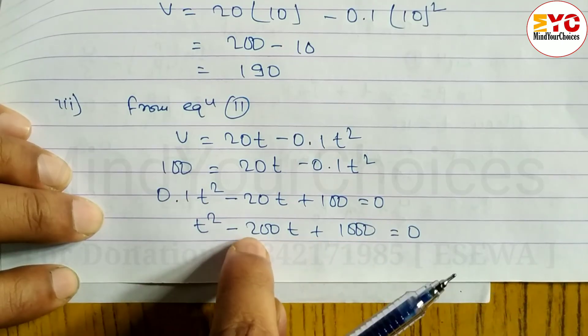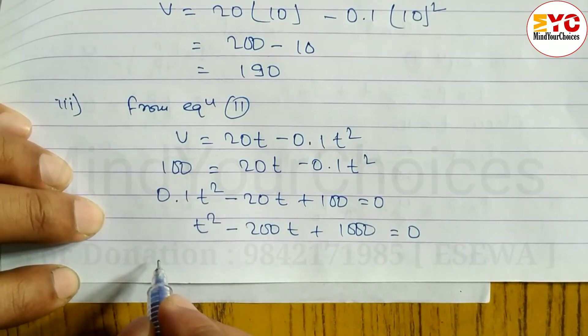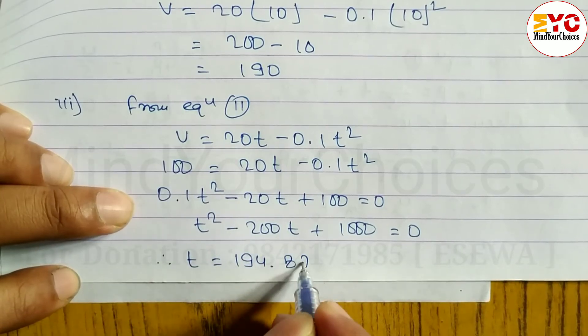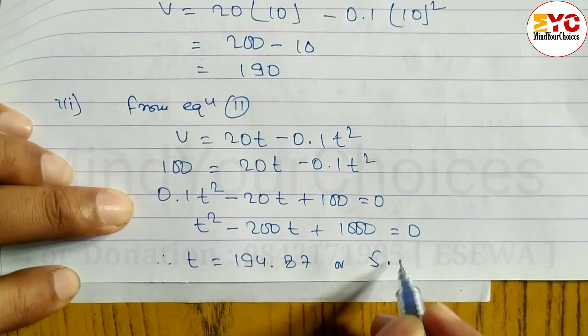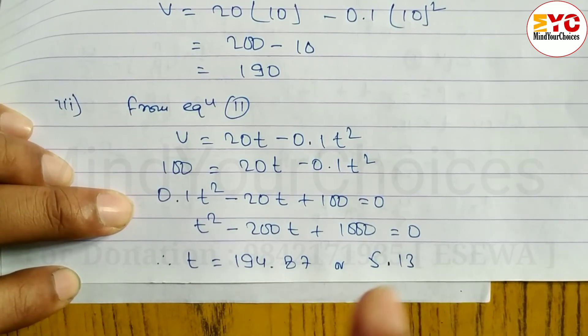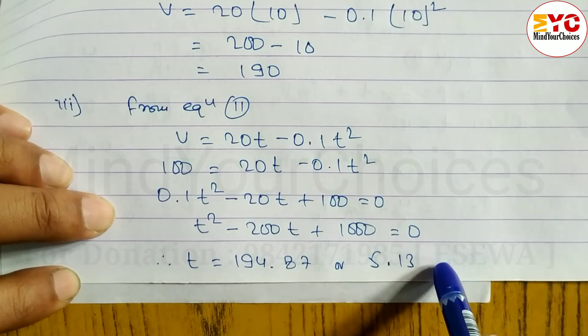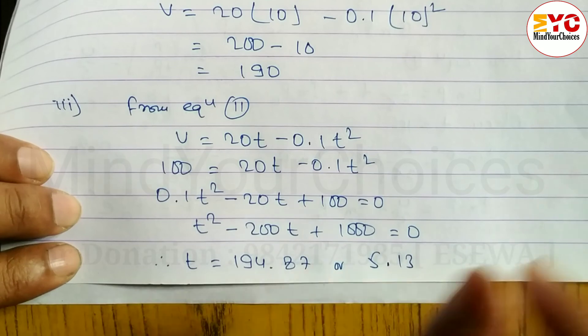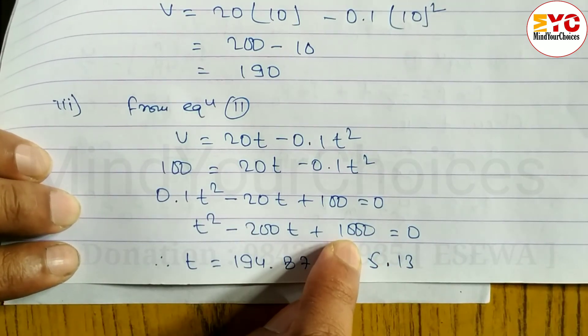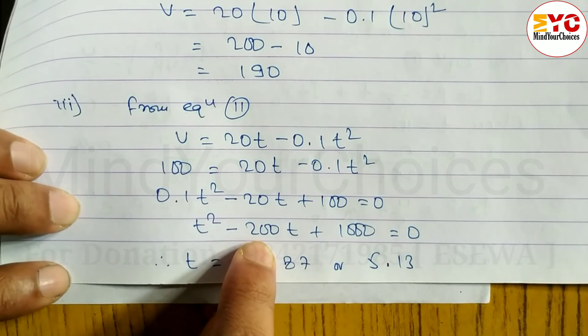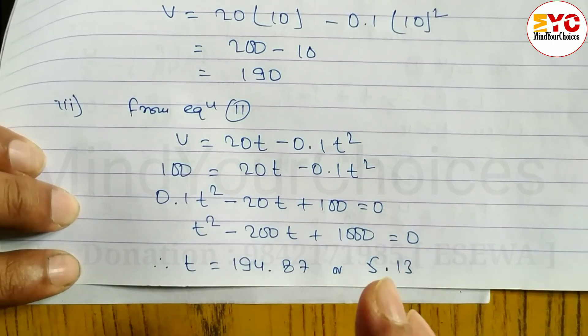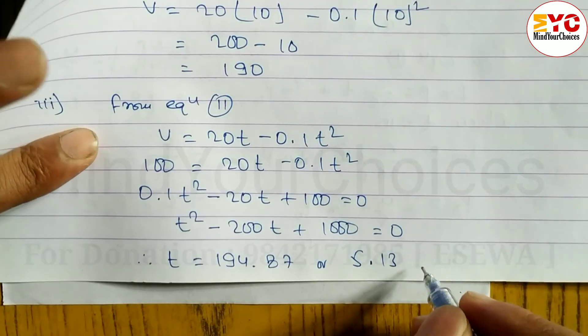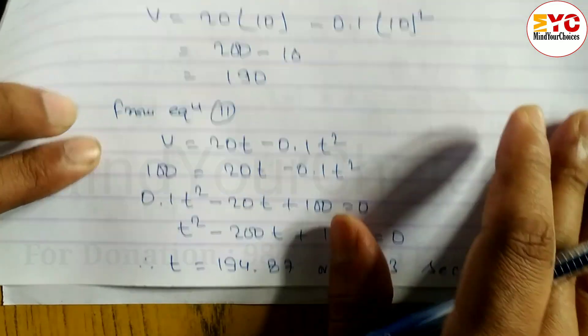Now find the value of T. Factorize or multiply and add to get 200 and 1000. So we can get: T equals 194.87 or the other value is 5.13. So the time is 5.13 seconds. When you factorize this you will get these two values. Multiply to get 1000, add to get 200. You can use the formula. You will get the value of T. So 5.13 seconds is your answer.